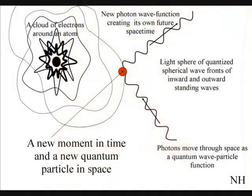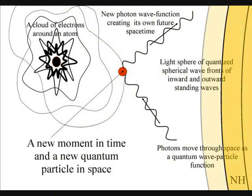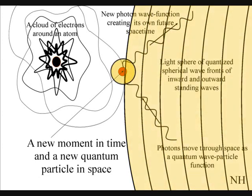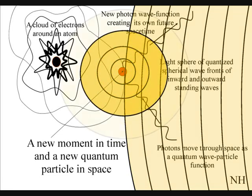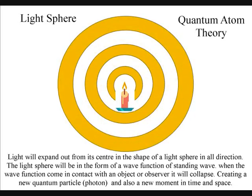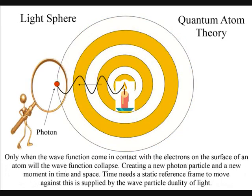To try and understand the photon, I have been working on my own theory called quantum atom theory. In quantum atom theory, time and space are linked by light. The wave-particle duality of light creates the time continuum. Light will expand out from its center in all directions as a light sphere of standing wave functions. Only when a wave function comes in contact with the electrons on the surface of an atom does it collapse into a quantum particle. This quantum particle will take the form of a photon and will need a position in space and time that the wave function never had. Therefore we have a new moment in time and space created by the smallest unit of radiant energy, the Planck constant.